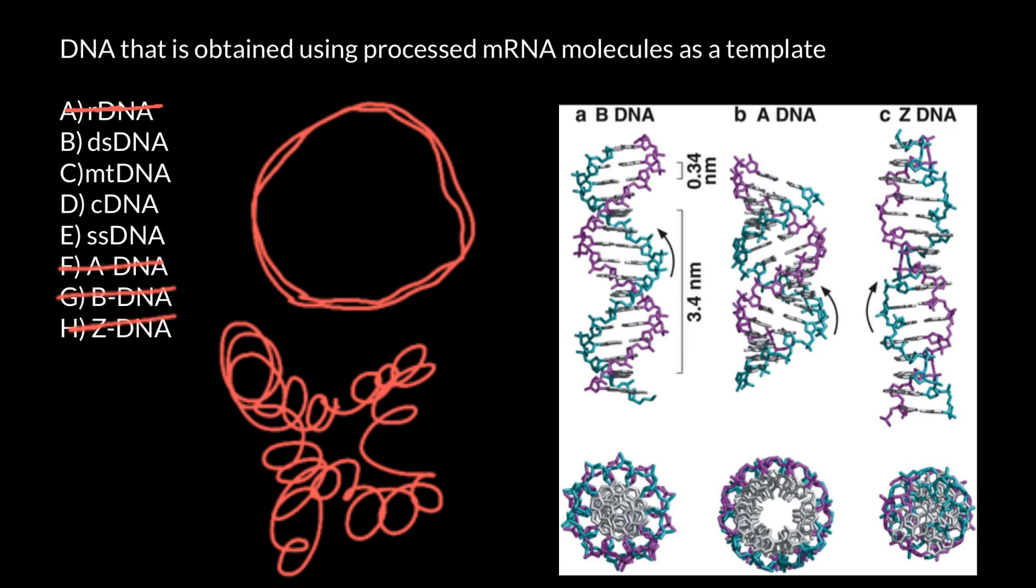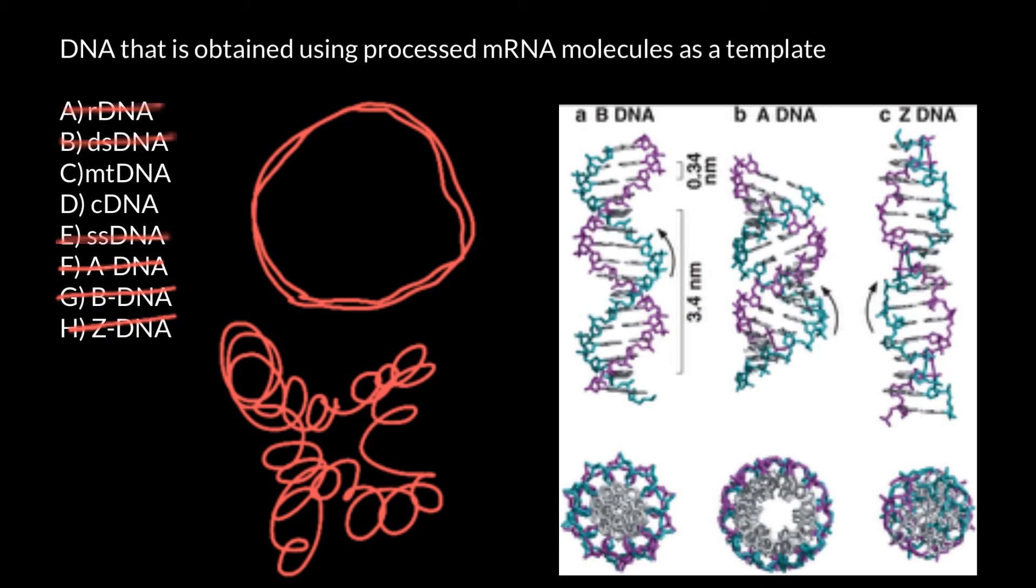Now we are left with answers B, C, D, and E. Answer B: dsDNA. Answer E basically describes answer B: double-stranded DNA. Where we can find single-stranded DNA? Many viruses would be single-stranded DNA. Some of them can be double-stranded DNA viruses, some can be single-stranded RNA viruses, some can be double-stranded RNA viruses. So many different forms.